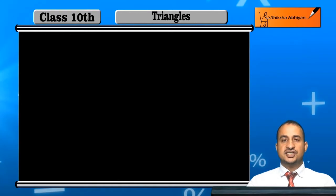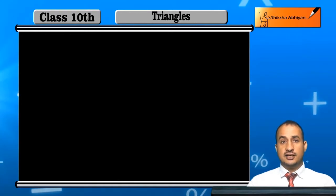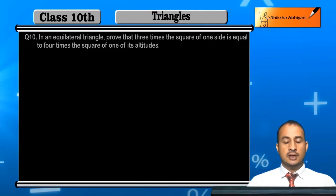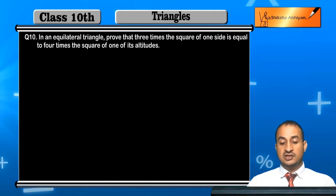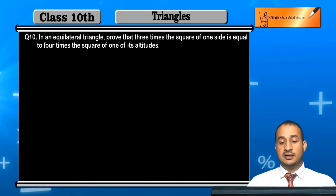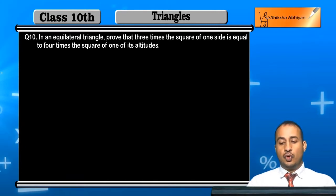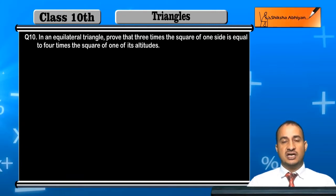Now students, see the 10th question of the exercise. The question is: in an equilateral triangle, prove that 3 times the square of one side is equal to 4 times the square of one of its altitudes.